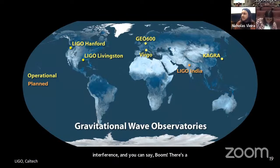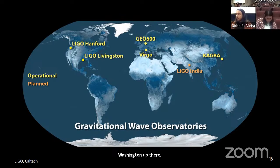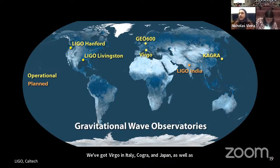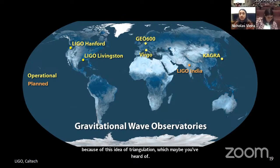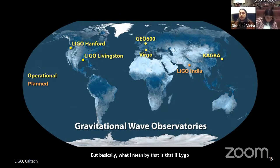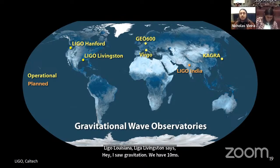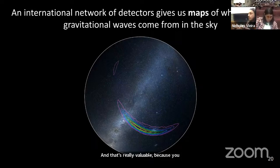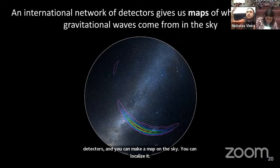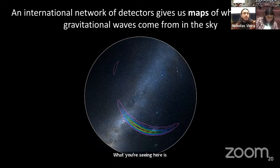Another really important aspect of these detectors is that we have more than one. There's LIGO Hanford in Washington, LIGO Livingston in Louisiana, Virgo in Italy, KAGRA in Japan, and others. This is important because of triangulation — if LIGO Hanford says it saw a gravitational wave, and then LIGO Livingston sees one 10 milliseconds later, you can tell which direction the gravitational wave is coming from. You can add up information from all your detectors, make a map on the sky, and localize where the source is. That's really important for the multi-messenger work.